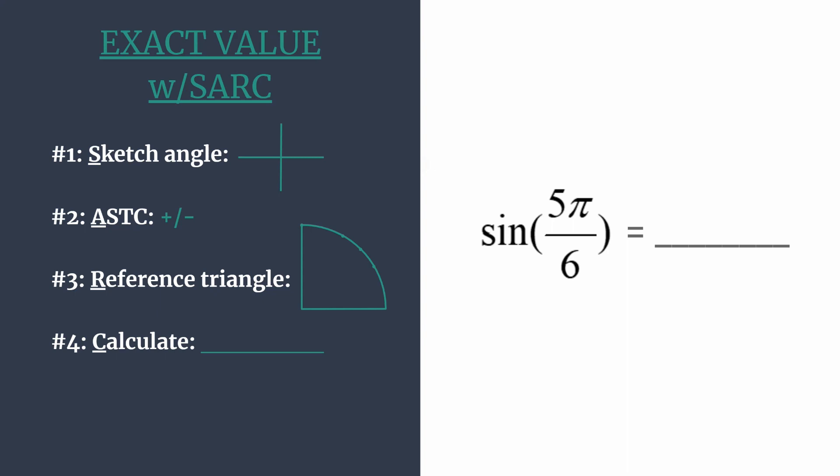So I like to start labeling just 0, π over 2, and here would be π, or another way to write that would be 6π over 6, and I think that's really helpful so that you can see that 5π over 6 must fall about right here. So our angle's terminal side is going to be in the second quadrant.